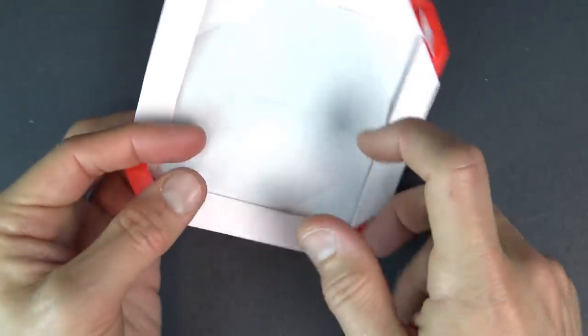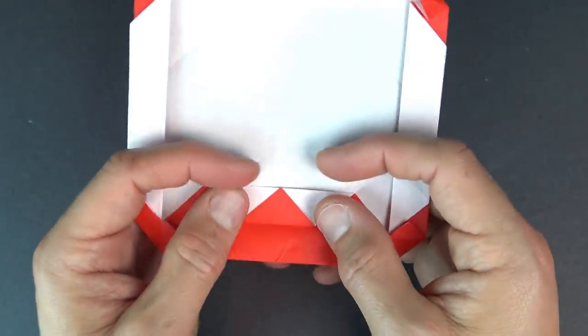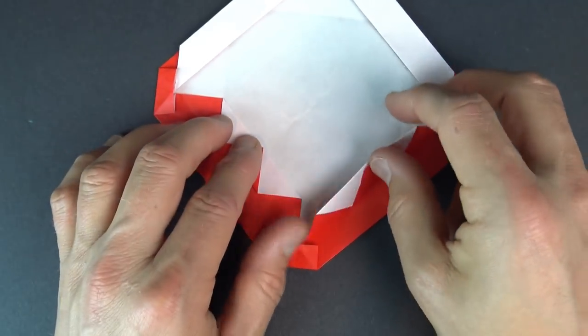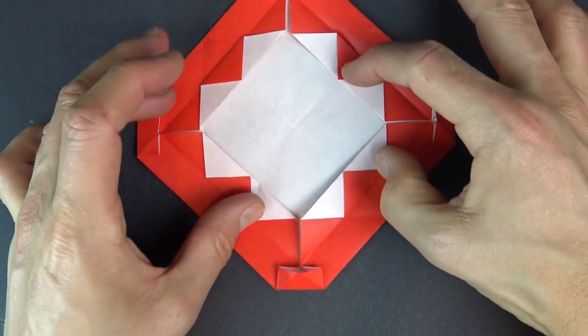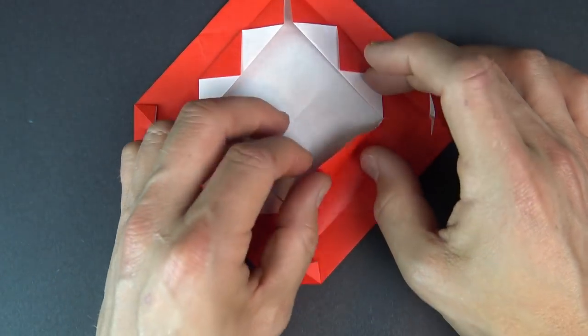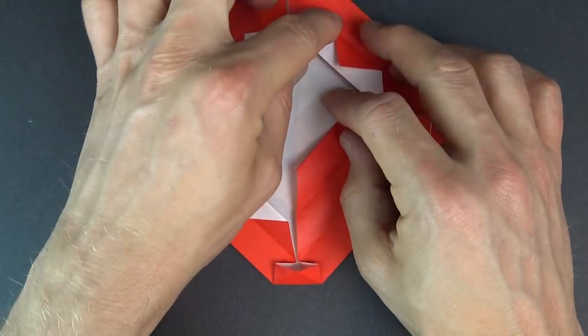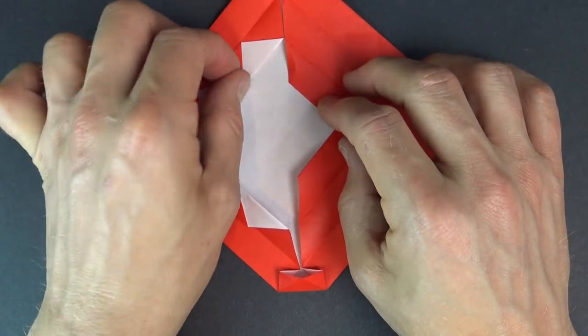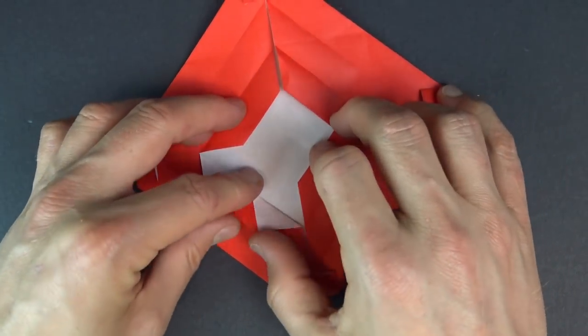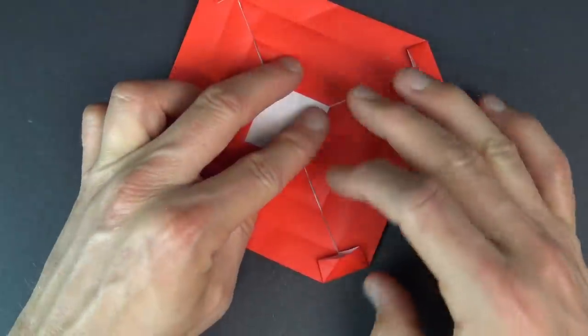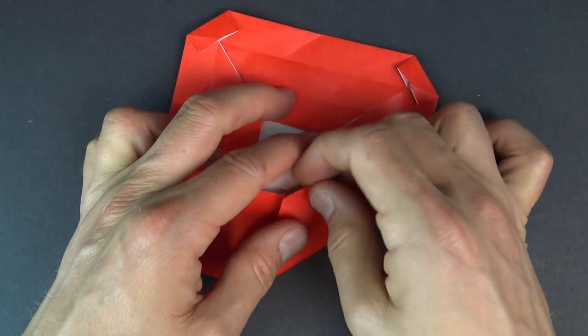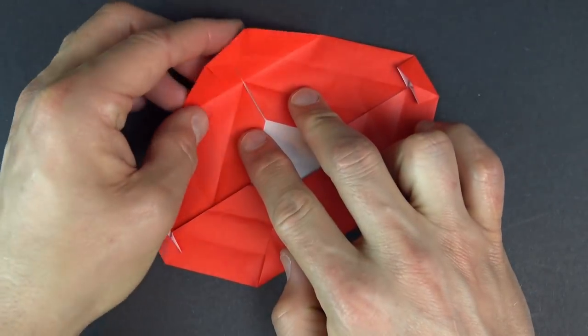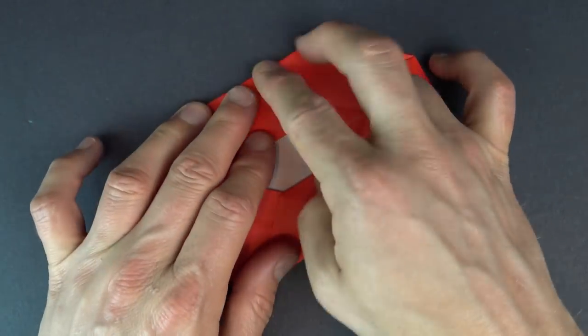Okay now unfold these flaps like this, that's a pretty shape, and now unfold again like this. Now fold two opposite flaps to the center, like that on the existing creases.